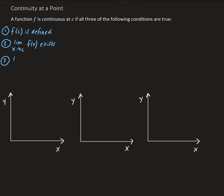And the third condition is that the limit as x approaches c of our function must be equal to the function defined at c. So those are the three conditions. What I want to do now is give three scenarios where each of these will be a function that's not continuous.